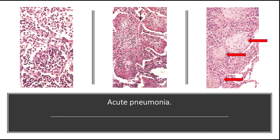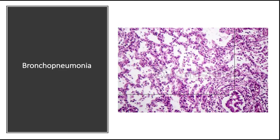Pleural fibrinous reaction to the underlying inflammation is often present in early stages as consolidation extends to the surface. This process is known as pleuritis, which may resolve or undergo organization leaving fibrous thickening or permanent adhesions. Foci of bronchopneumonia are consolidated areas of acute suppurative inflammation, more often multilobar and frequently bilateral and basal. Histologically, a neutrophil-rich exudate fills the bronchioles and adjacent alveolar spaces.